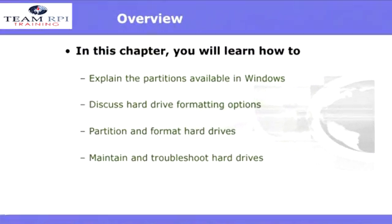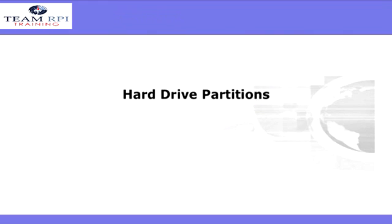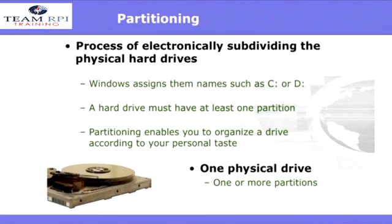I'll explain the partitions available in Windows, discuss hard drive formatting options, how to partition and format hard drives, and how to maintain and troubleshoot your hard drives. Partitioning is the process of electronically subdividing the physical hard drives. Windows assigns them names such as C or D. Partitioning enables you to organize the drive according to your personal taste. One physical drive can have one or more partitions.